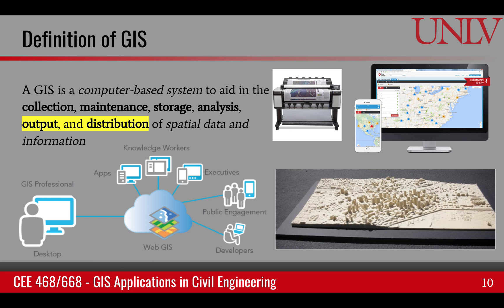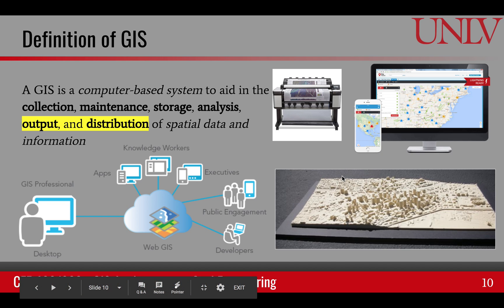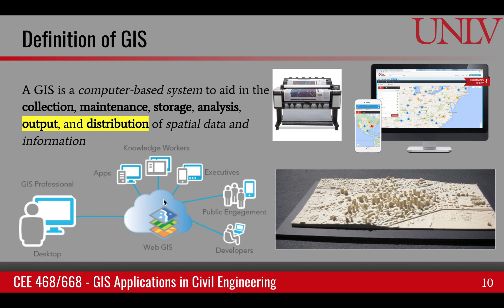The final keywords are output and distribution. This is where we take the analysis results and disseminate them. Output can be printed, displayed on a screen or mobile device, or converted into a 3D model. Nowadays we have web GIS where all of this happens in real time and information is disseminated to individual mobile devices — such as Google Maps, MapQuest, and similar navigational software.